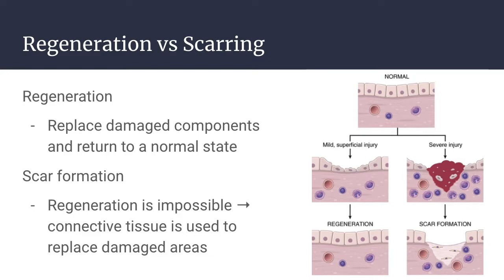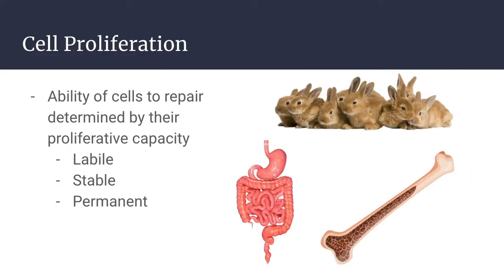The scar is not normal, but it provides enough structural stability that the injured tissue is able to function to some degree. The ability of tissues to repair themselves is partially determined by their intrinsic proliferative capacity. Labile tissues, or continuously dividing tissues — these cells are constantly being lost and replaced normally through tissue stem cells. Examples include hematopoietic cells in bone marrow, the majority of epithelia like skin, oral mucosa, ducts draining exocrine organs, and the lining of the GI tract. These can readily regenerate after injury, as long as the stem cell pool is preserved.